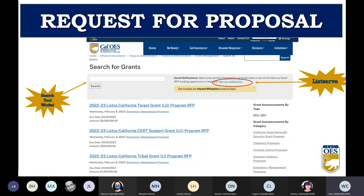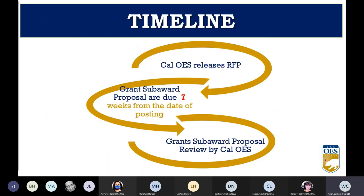I'd also like to draw your attention to the mailing list. When Cal OES releases a request for proposal, we send an email notification to anyone who has signed up. We only send emails when we release a new RFP, when we're soliciting for an advisory body position, or when we post a public meeting notice. If you are not signed up already, we strongly encourage you to do so. Cal OES released the Listos California Tribal Grants Program RFP on February 8, 2023, giving applicants approximately seven weeks to put their proposal packets together.